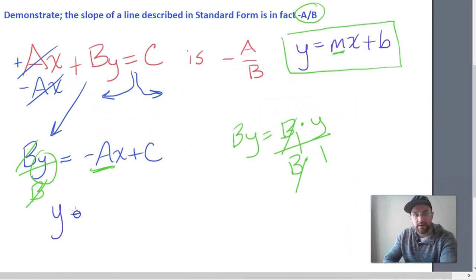We end up with y equals negative Ax plus C. We have to divide away B on this side too. So we divided B over here, so now we have to divide B over here.